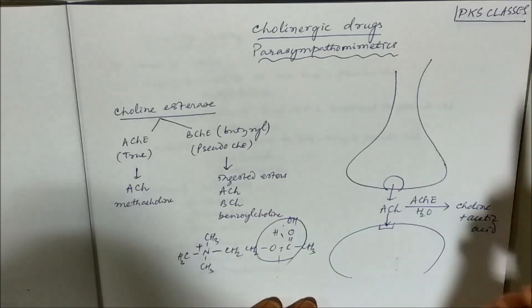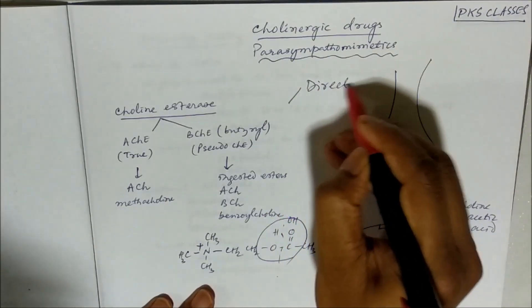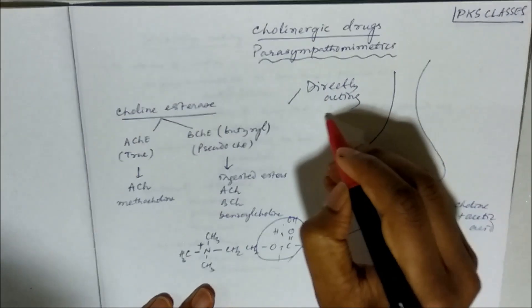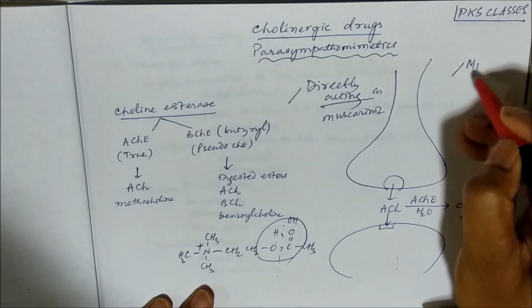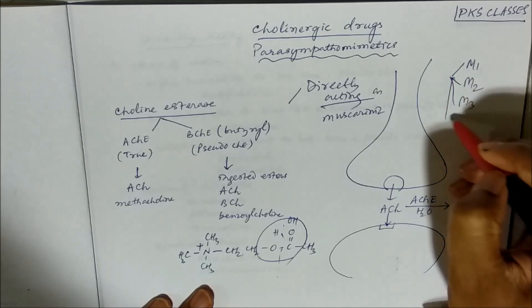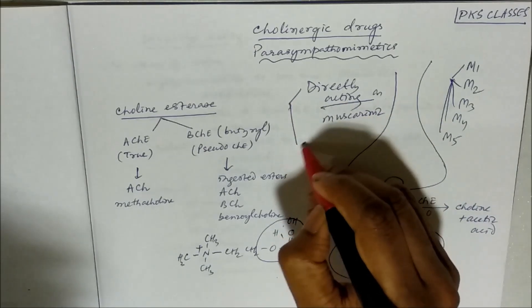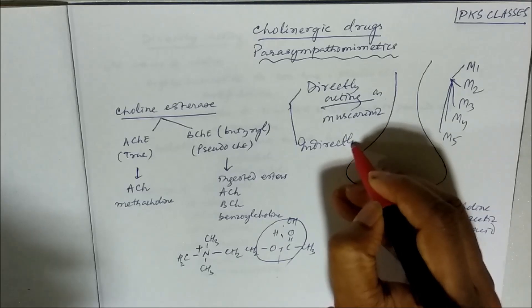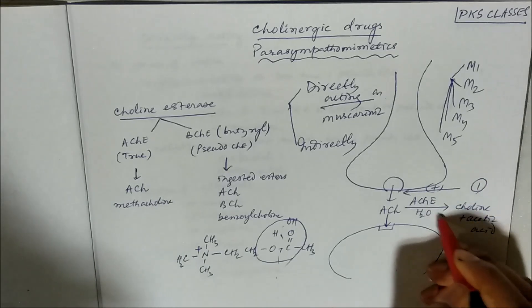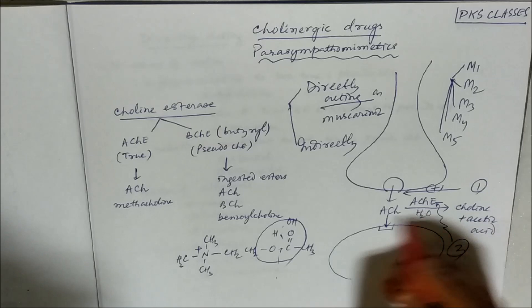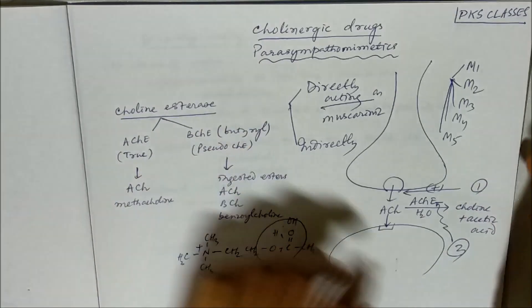When we say parasympathomimetic, that means all drugs which can directly act as agonists on muscarinic receptors. We know there are five types of muscarinic receptors: M1, M2, M3, M4, and M5, with non-selective drugs acting on all of them. We can also have indirectly acting drugs - those which increase the release of acetylcholine, and those which inhibit acetylcholinesterase, thereby increasing the level of acetylcholine.